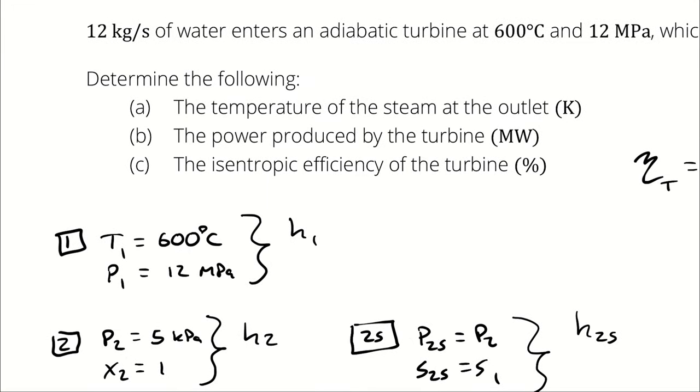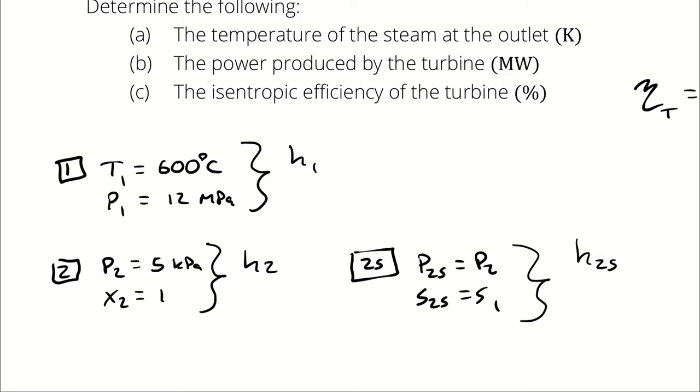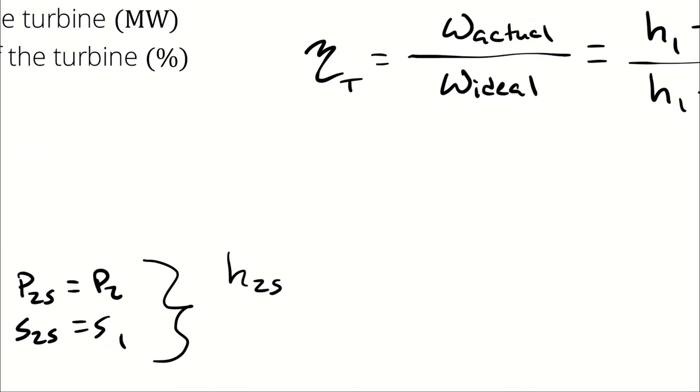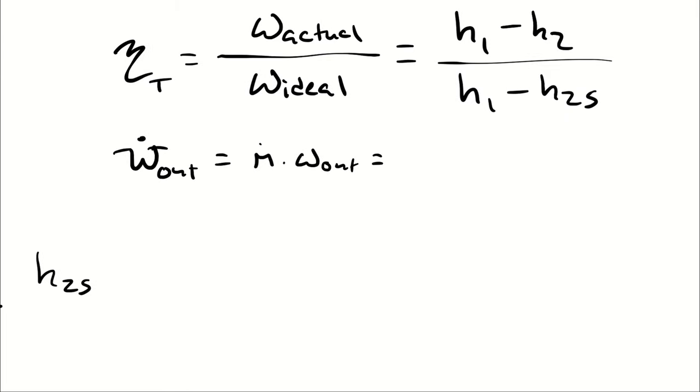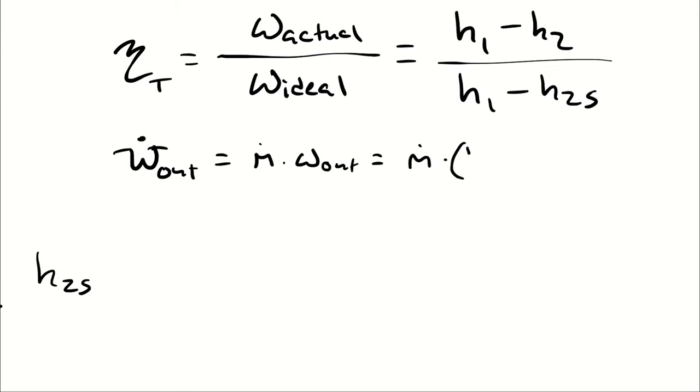Then I also wanted the temperature of the steam at the outlet. So I'm just double-checking that we know which state point is the real temperature. And then I have the power produced, which from the energy balance is going to become W dot out, which is M dot times specific work, which is M dot times H1 minus H2.